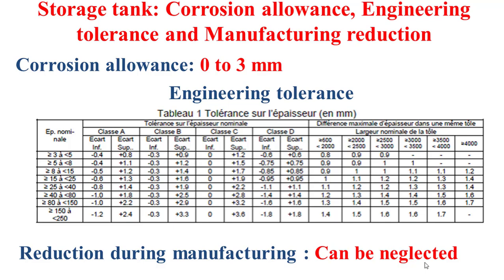The reduction during manufacturing, C2, depends on the fineness and precision of the manufacturing process, and generally it can be neglected, taking a value of 0 mm.